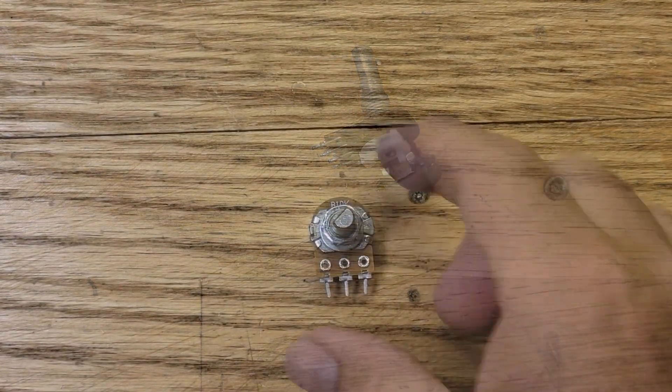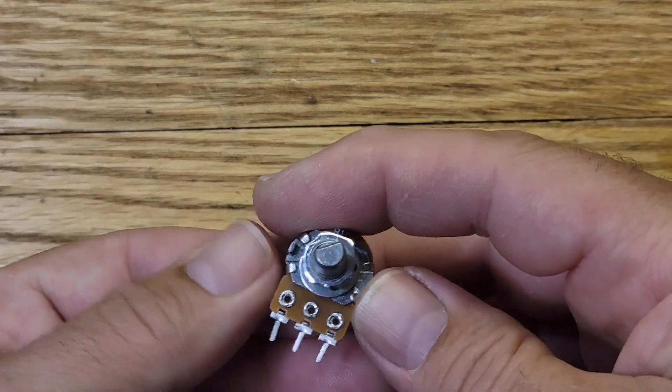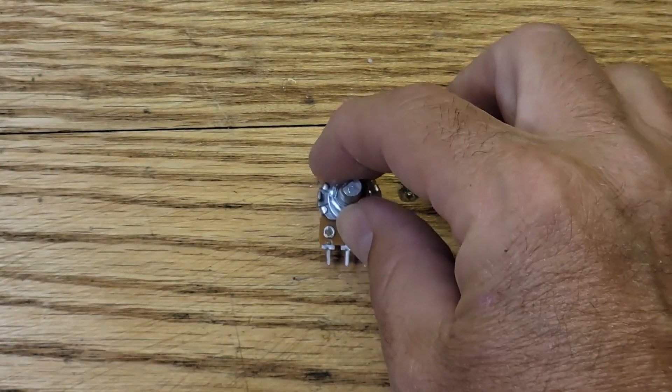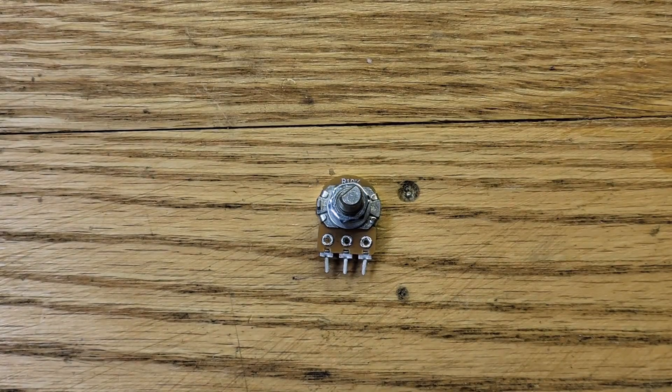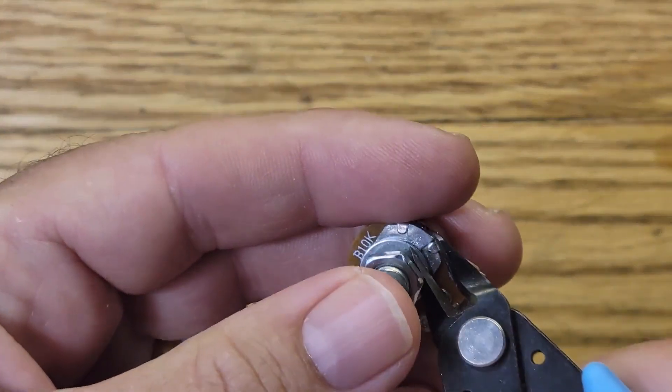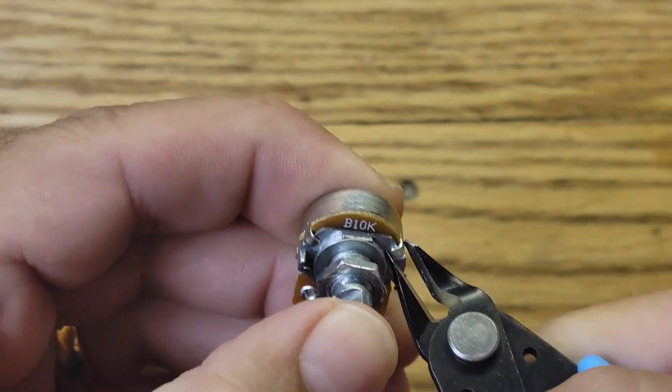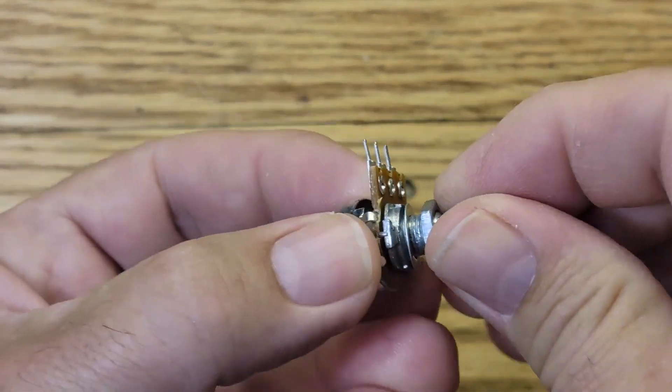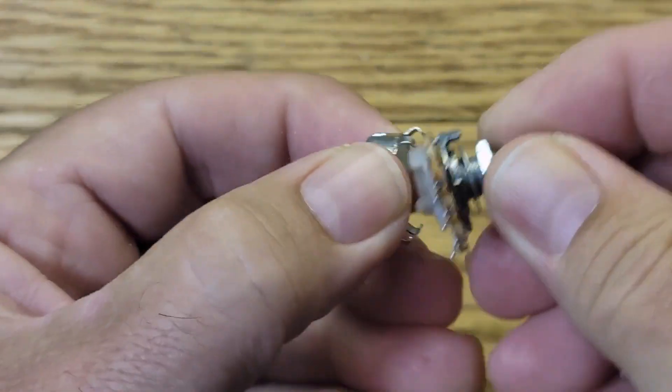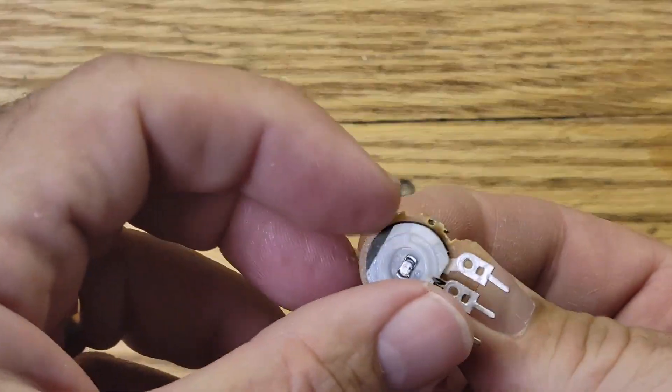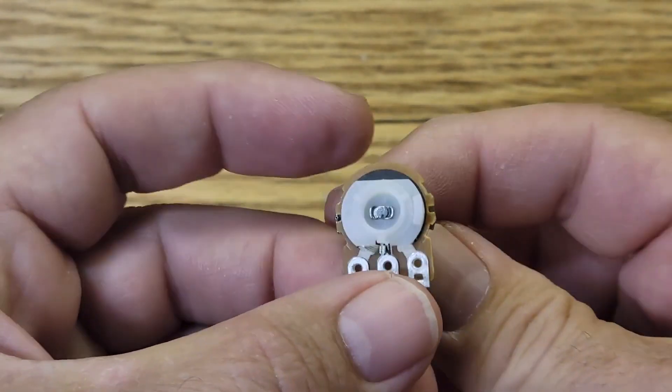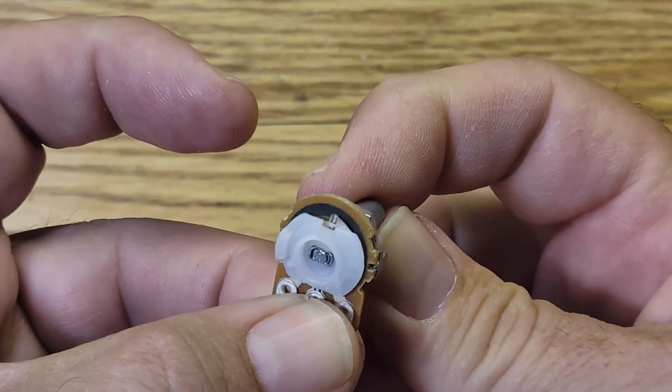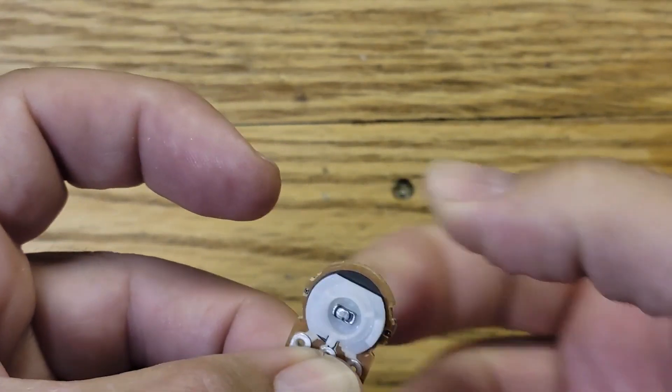All right, here is a standard three pin 10K linear potentiometer that we are going to modify to make a center tap four pin potentiometer. Let's open it up and see how we're going to modify it. Let's see how far the wiper goes, how close to the edge. It's about one or two millimeters off the edge, so we have some space at the top to modify this.